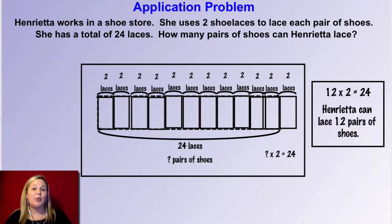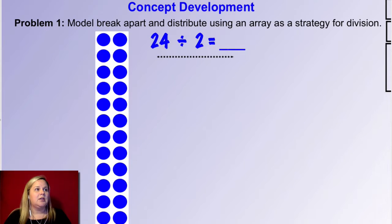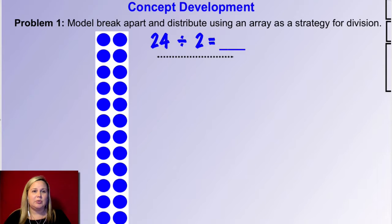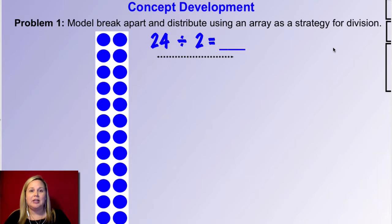Let's jump in and look at another problem. We're going to model how we can break apart and distribute — that's the distributive property — using an array as a strategy for division. So let's take a look at this array. There are two in each row and there are 12 rows, giving us 24 dots total. You're more than welcome to draw this array on your dry erase board to manipulate it along with me. If you want to pause and draw a 12 by 2 array, you can. Our problem up here is 24 divided by two equals a blank, and we're going to use this array to help us solve it.